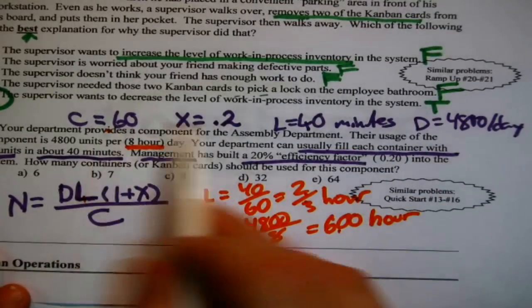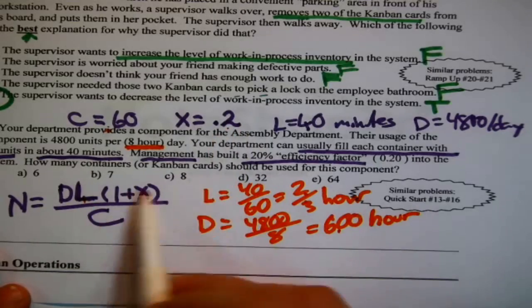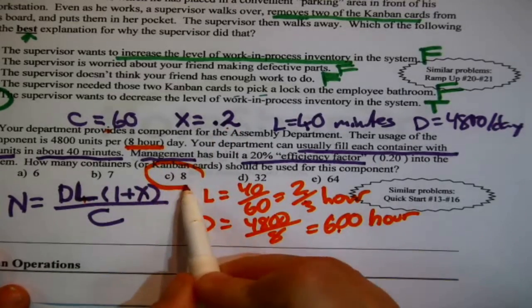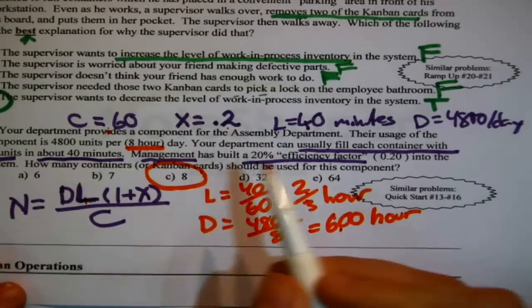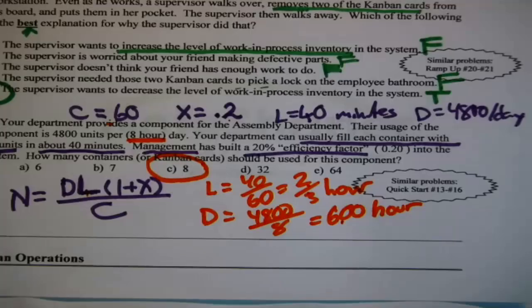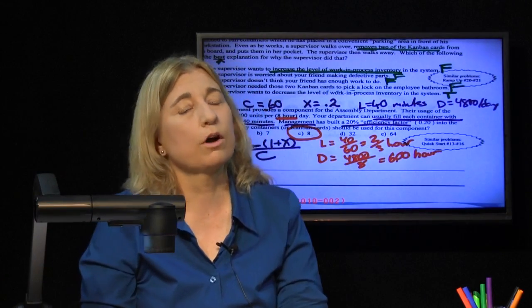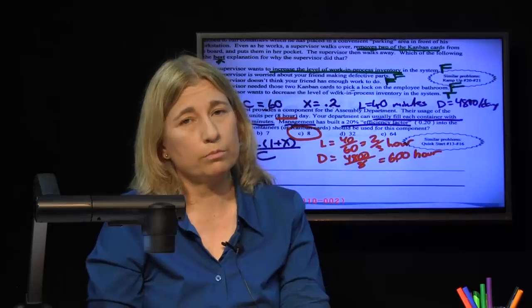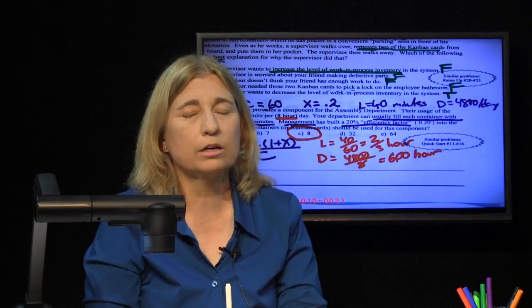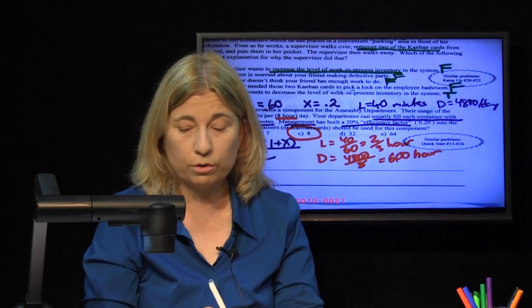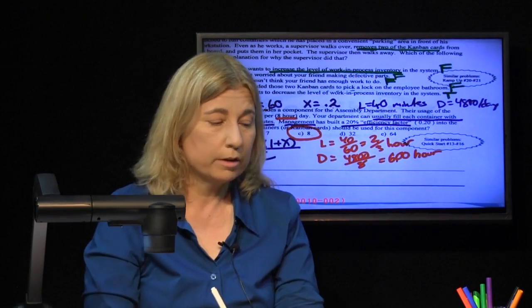Take those converted values, plug them into the formula — don't touch C — and you get simple arithmetic. The best number of cards to control that particular item would be eight cards, according to Toyota's formula.